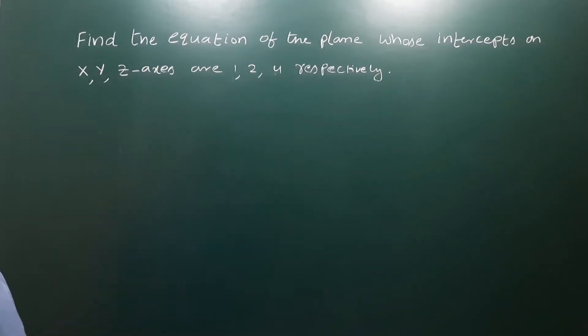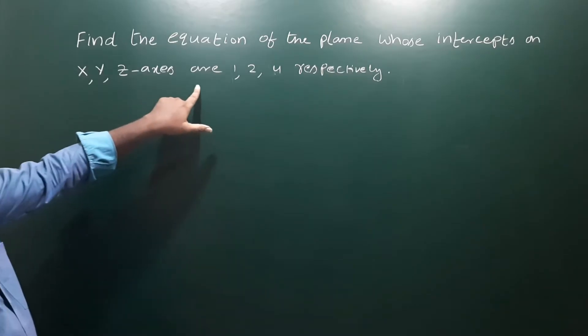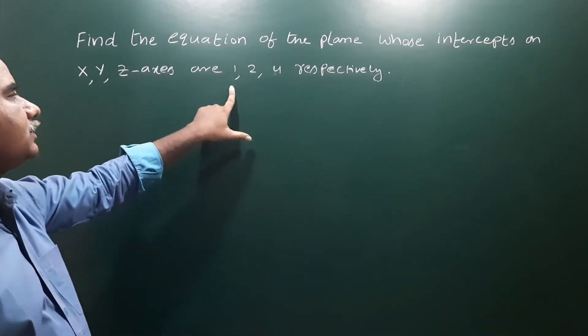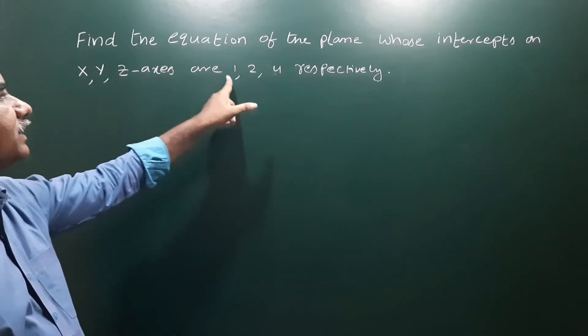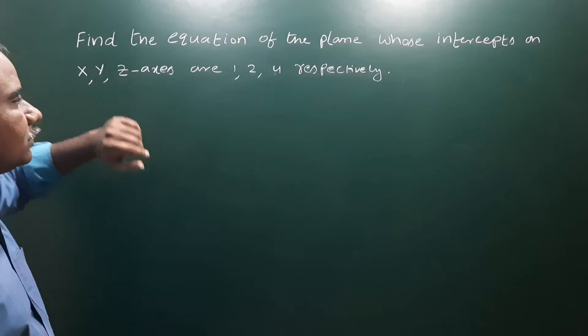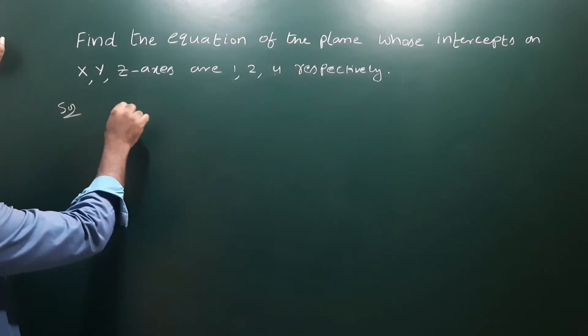Find the equation of the plane whose intercepts on the x, y, z axis are 1, 2, 4 respectively. So the intercepts on the x-axis, y-axis, and z-axis are given. We need to find the equation of the plane. Let's start the solution with the x intercept.